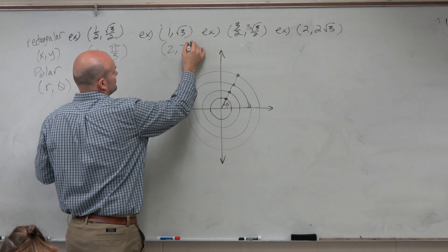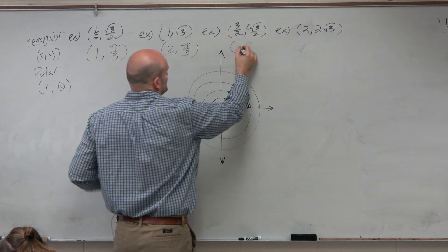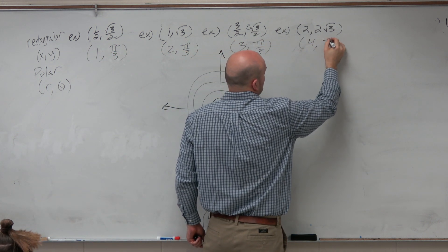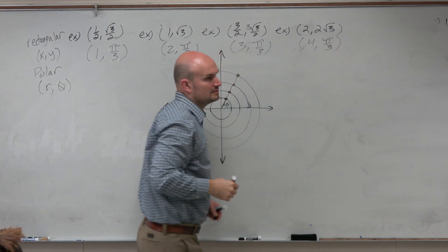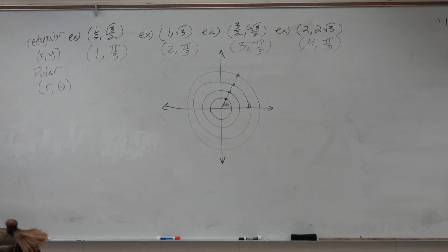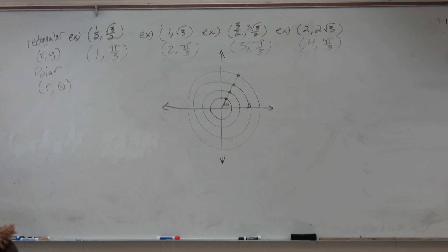So look how easy it is for me to write the rest of these. This one is 2, pi over 3. This one is 3, pi over 3. 4, pi over 3. So you kind of see how polar points can be convenient for us? It's pretty simple to go ahead and graph those.